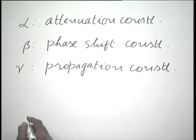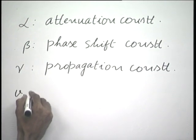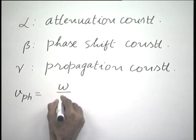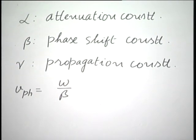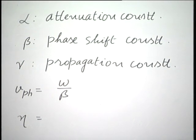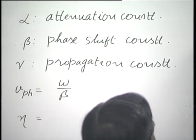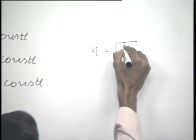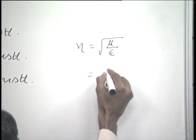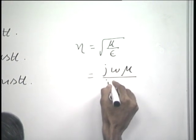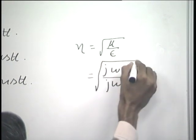In terms of the phase shift constant, the phase velocity Vp is ω/β. The intrinsic impedance η of the conducting medium: for a perfect dielectric we had η = √(μ/ε), which can be rewritten as √(jωμ / jωε). Considering Maxwell's first equation, del×H = jωεE + σE = (jωε + σ)E, we see that jωε is replaced by jωε + σ.